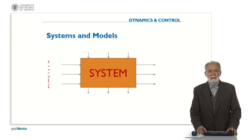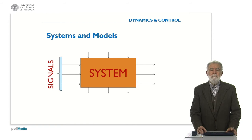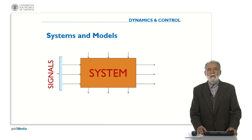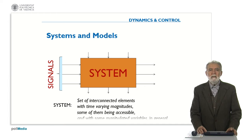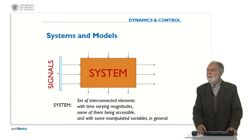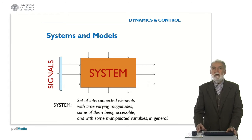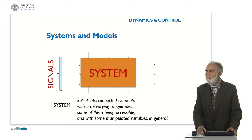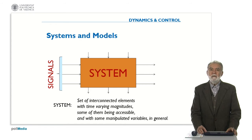We saw that the system and the signals are connected and there are many kinds of signals attached to the system. Some of them are inputs influencing the behavior of the system, and some of them are providing information. So, we define a system as a set of interconnected elements with time-varying magnitudes, some of them being accessible, measurable, and with some manipulated variables in general — not all systems.